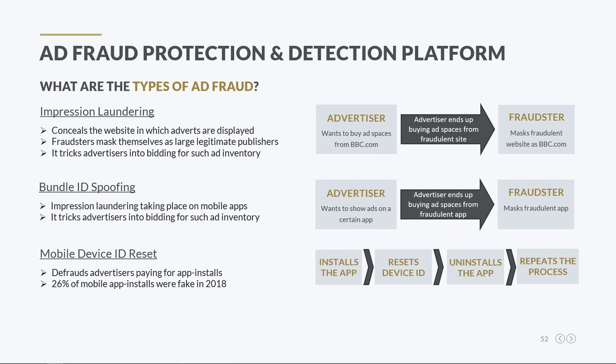Mobile device ID reset ad fraud is a common practice to defraud advertisers paying for app installs. Bots click on app install ads, download the corresponding apps, then reset the mobile device ID, uninstall the apps, and begin the process again. This technique fools advertisers into believing that the app was installed on many devices by many users. According to AppsFlyer, device ID reset fraud accounted for 26% of mobile install fraud in 2018, amounting to losses of up to $1 billion US dollars.